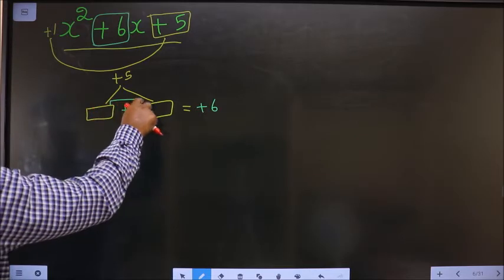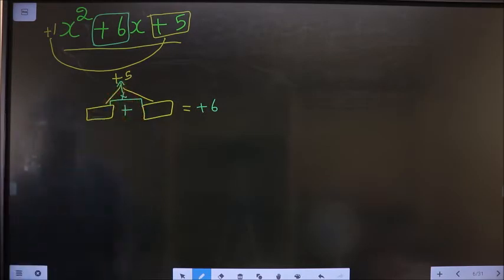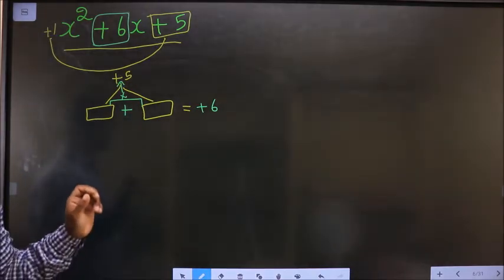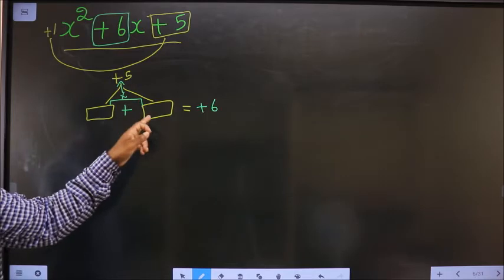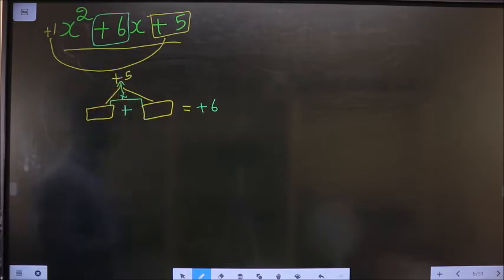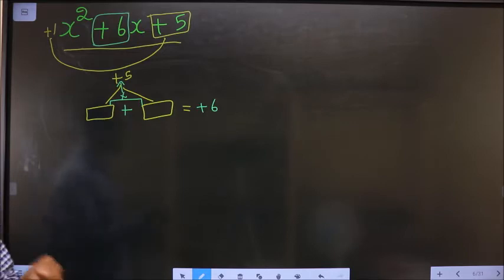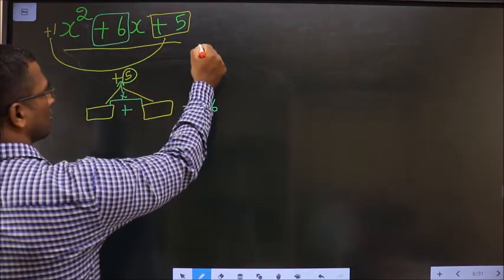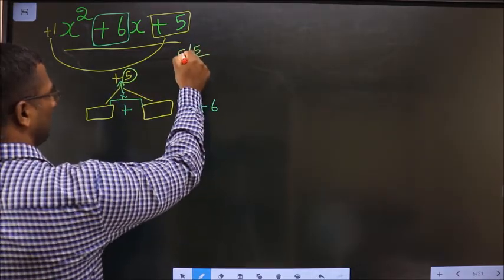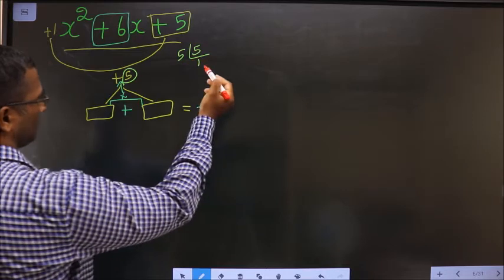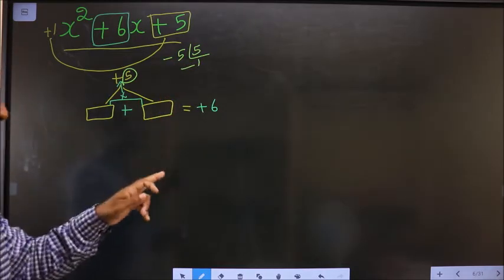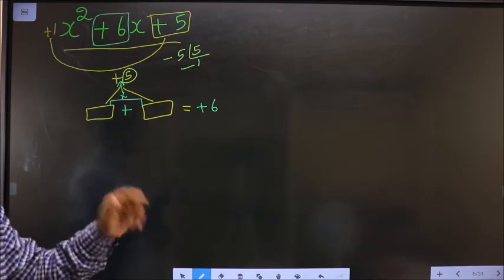Not only that, when you multiply these two numbers you should get plus 5. Look out for two numbers such that when you add you get 6 and when you multiply you get 5. How do we find those two numbers? By taking the LCM of 5. The LCM of 5 gives only 5 and 1, so the two numbers are 5 and 1: 5 plus 1 is 6, and 5 into 1 is 5.